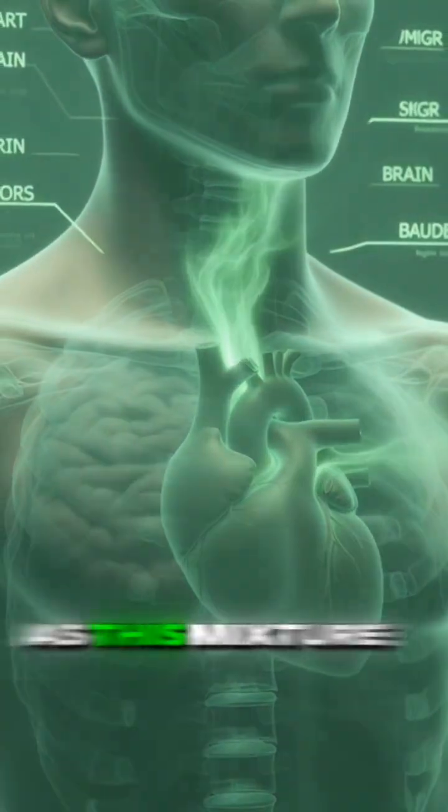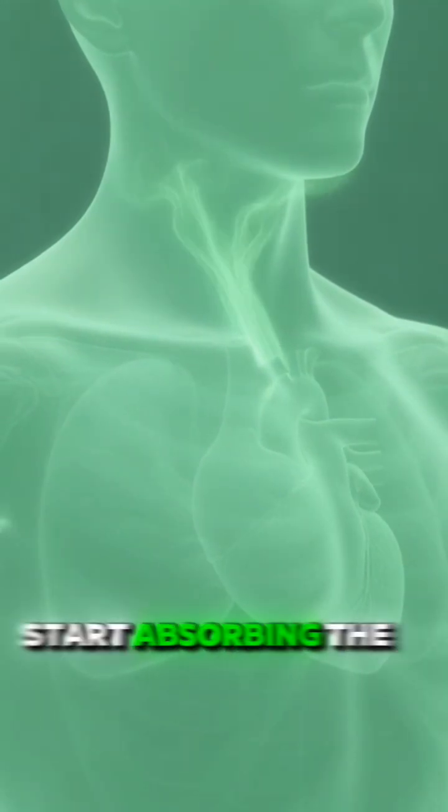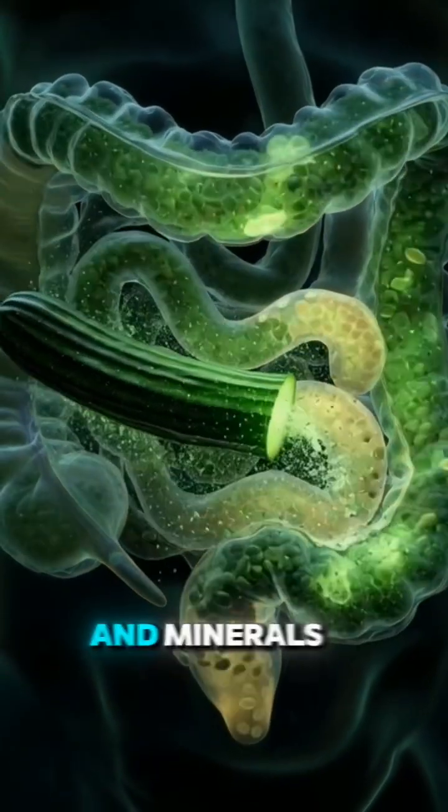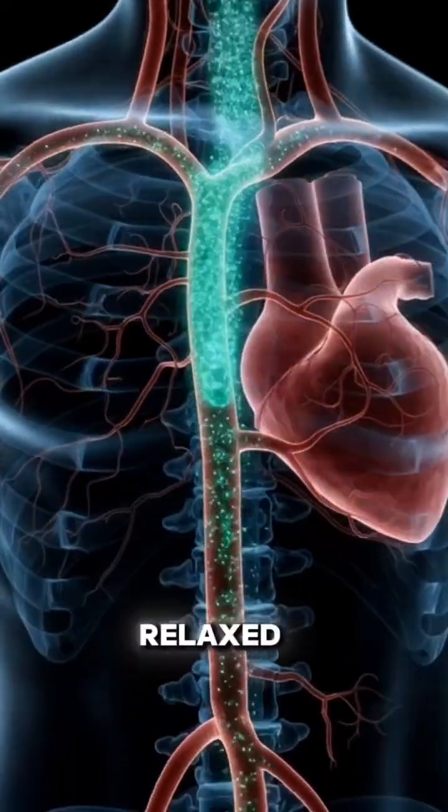As this mixture enters the small intestine, the intestinal walls start absorbing the cucumber's vitamins and minerals. Its soluble fiber helps smooth digestion and keeps your gut calm and relaxed.